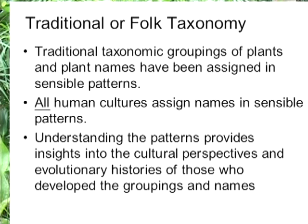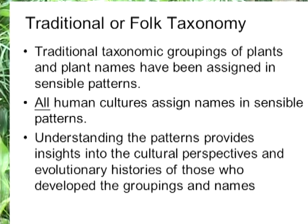Alternatively, we might be in a society of hunter-gatherers where they roam over a large area of land and they might actually group together plants that have similar characteristics under a single name — plants that we would call as scientists several different species or maybe even different genera, but they would assign one name because they have one commonality. Maybe they grow in the same environment, or they have the same usage. There are a lot of reasons why they're grouped, and the big point is that the patterns of naming of plants make sense — they're not arbitrary. A second characteristic of traditional or folk taxonomy is that all human cultures assign names in these kinds of patterns.